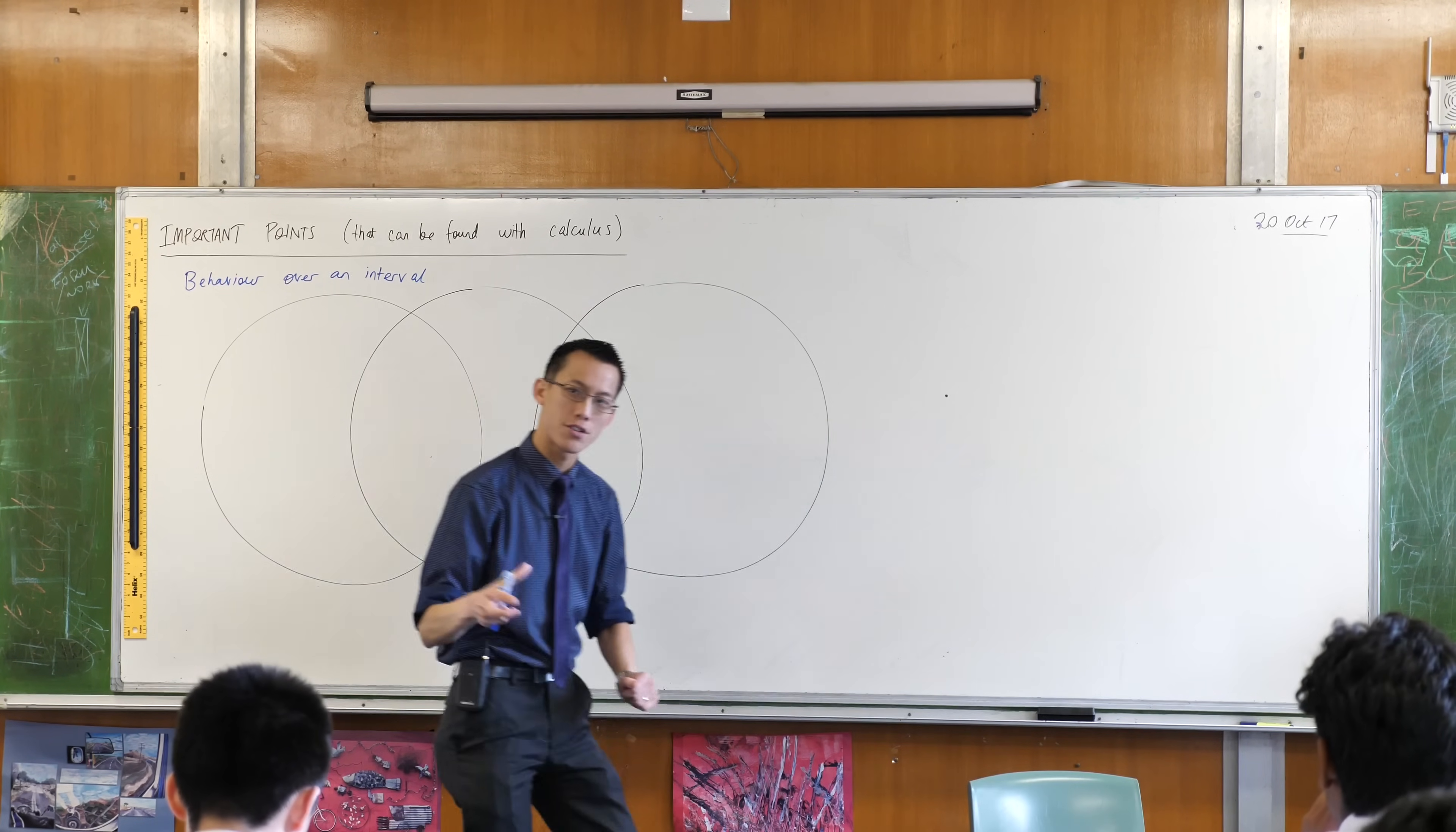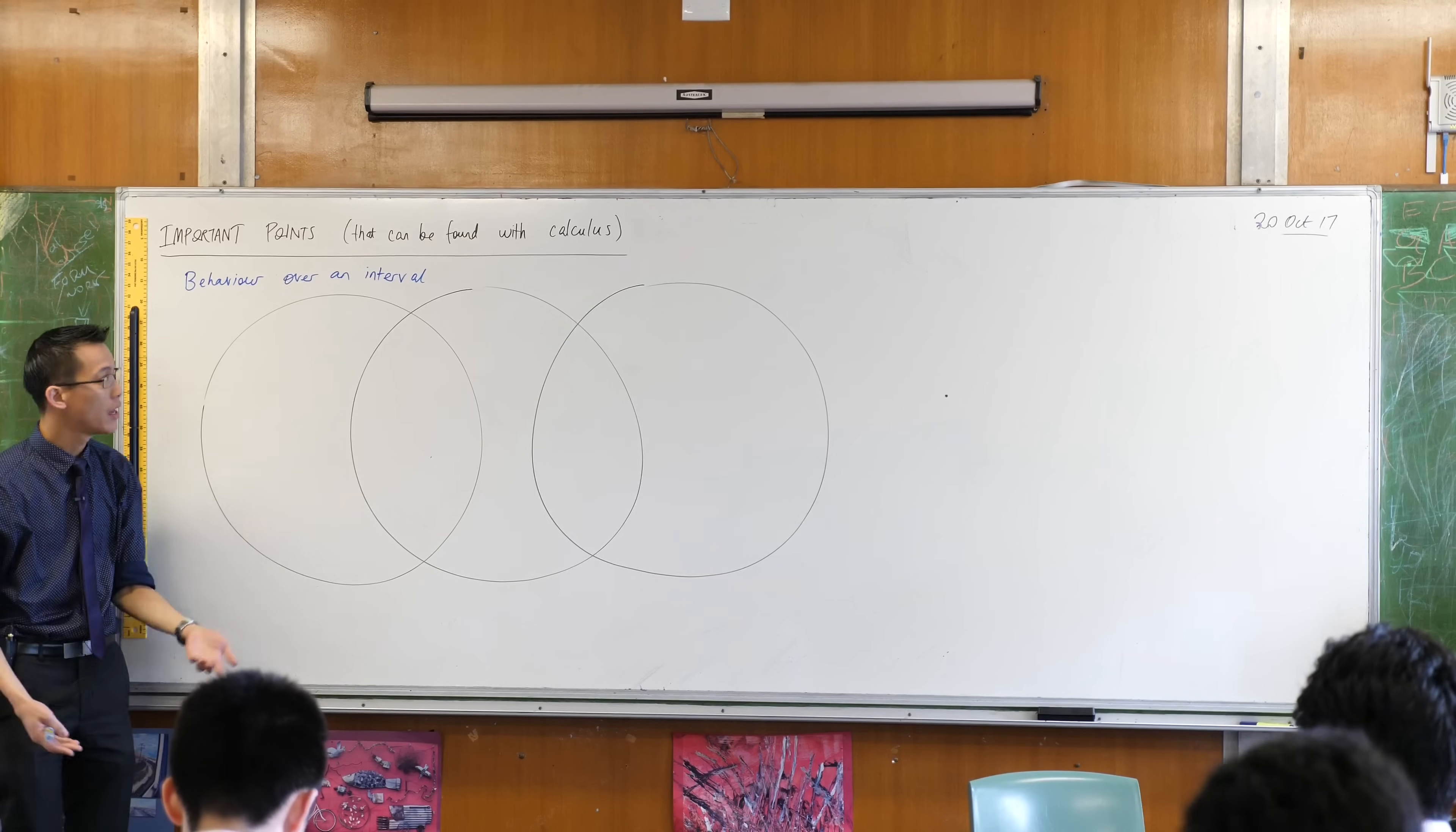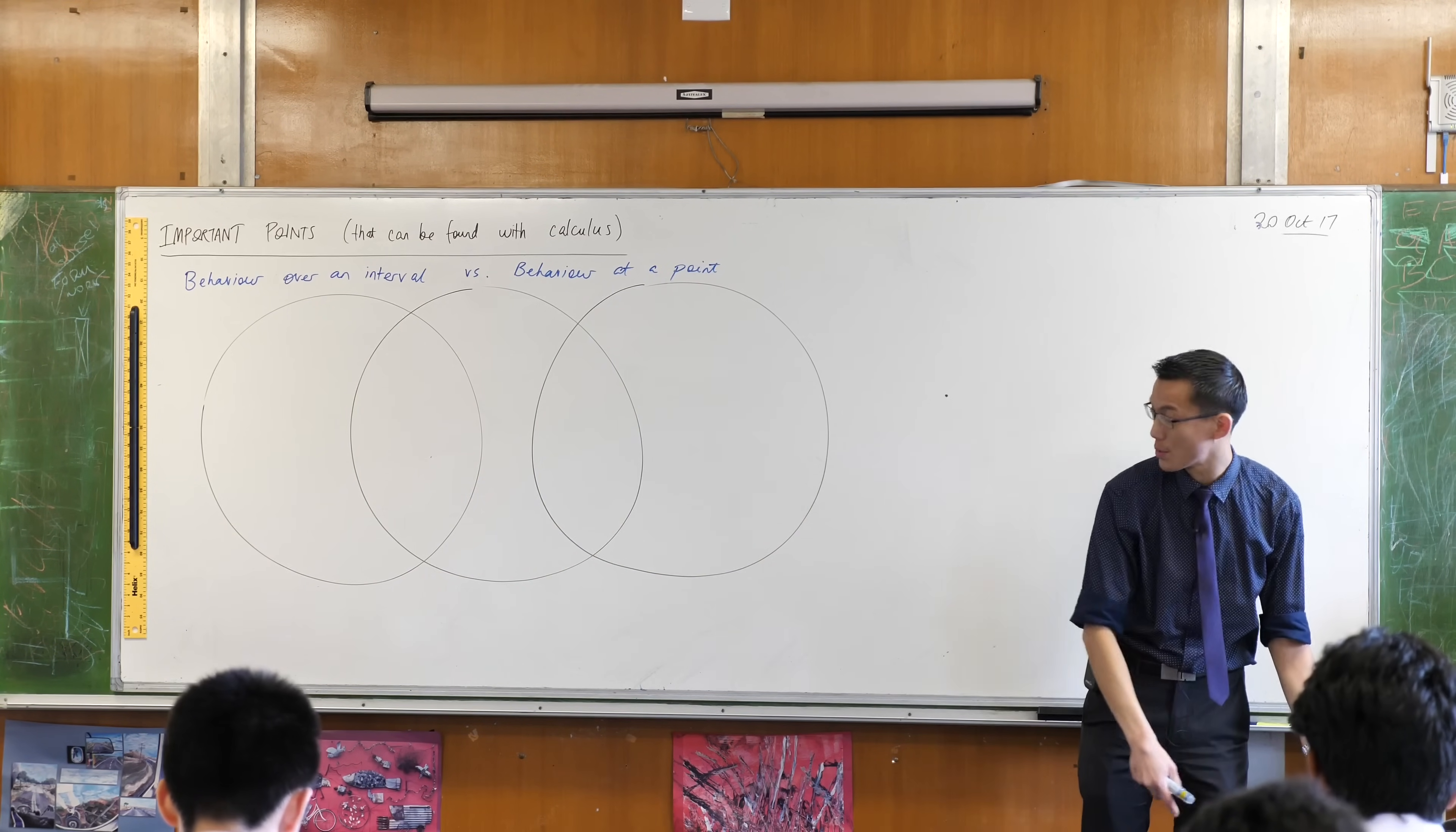Behavior over an interval is this language, but we in calculus know that we can actually do more than just say rise over run from here to here. We can somehow do rise over run at a single location even though there's no run. That's what limits allows us to do. While behavior over an interval is what you focused on Wednesday, what we want to now think about is behavior at a point.